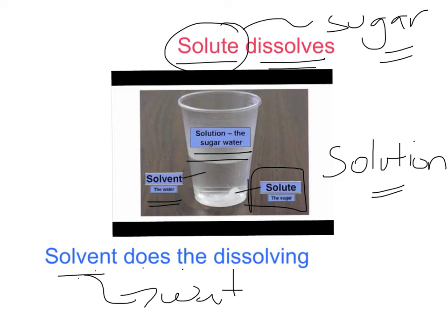So our solvent is water and our solute is sugar and if we combine those two, if we bring them together, they mix together and what happens is we create a solution, we create sugar water.